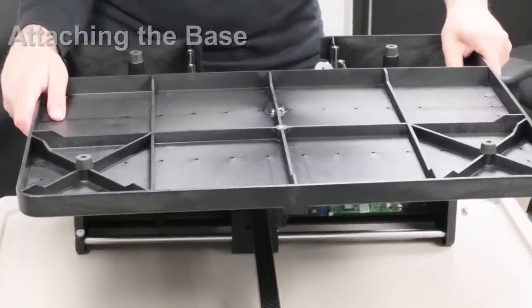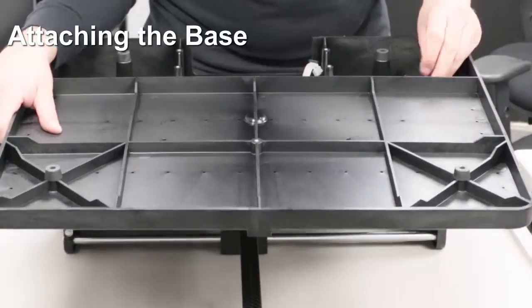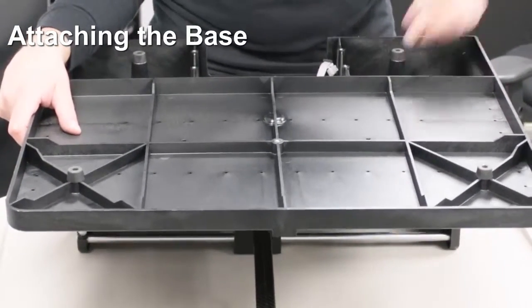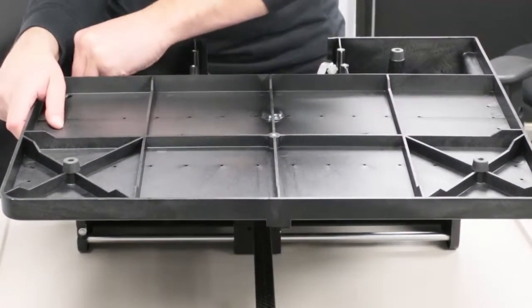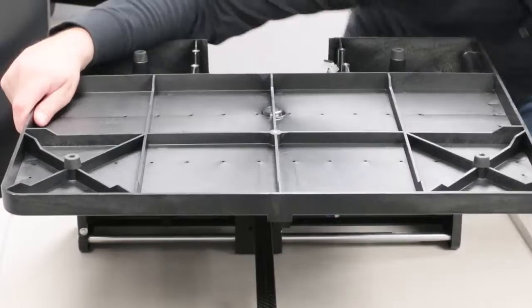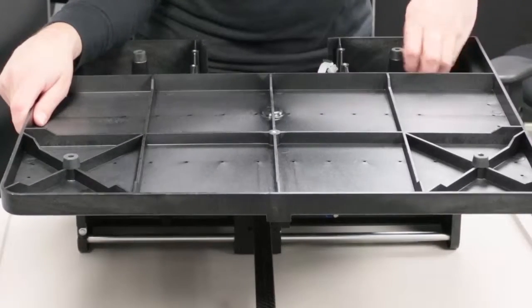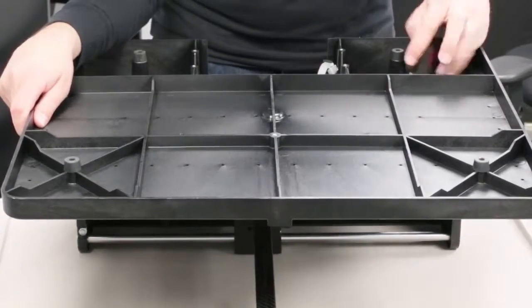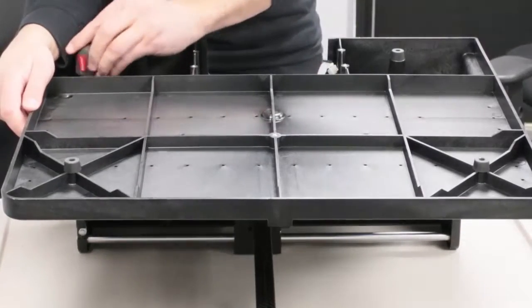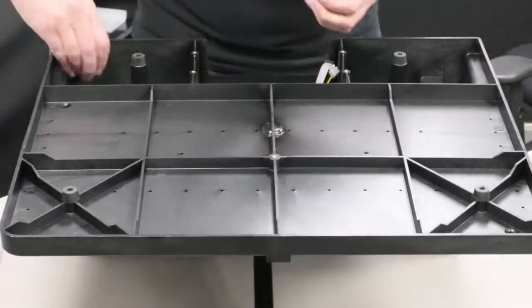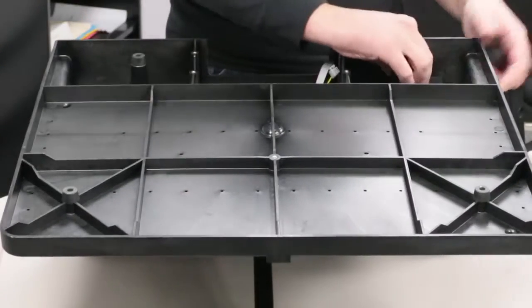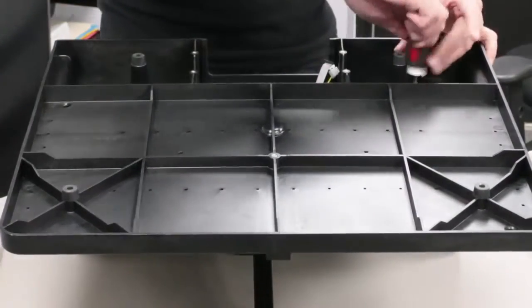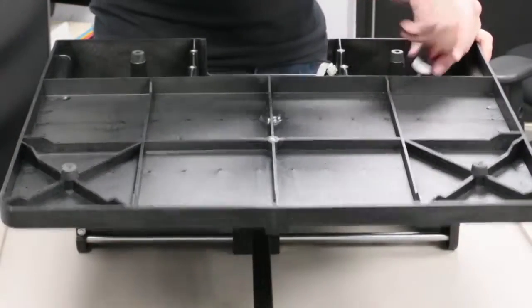Lower the base onto the autosampler. Reinstall the four screws. Make sure all four screws are tight.